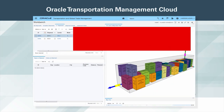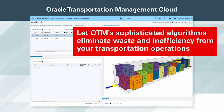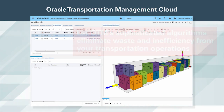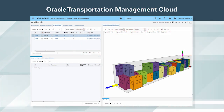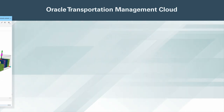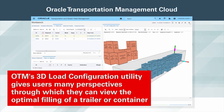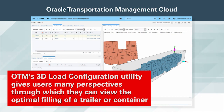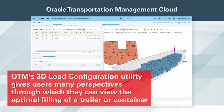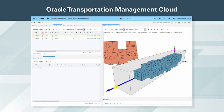Let OTM's sophisticated algorithms eliminate waste and inefficiency from your transportation operations. 3D load configuration capabilities will optimize container utilization, saving money by reducing the number of trucks needed to move goods, while simultaneously lowering emissions. OTM's 3D load configuration utility gives users many perspectives through which they can view the optimal filling of a trailer or container. In this example, we're deconstructing the shipment by stop, enabling the user to see exactly which ship units are being unloaded at the first delivery location.